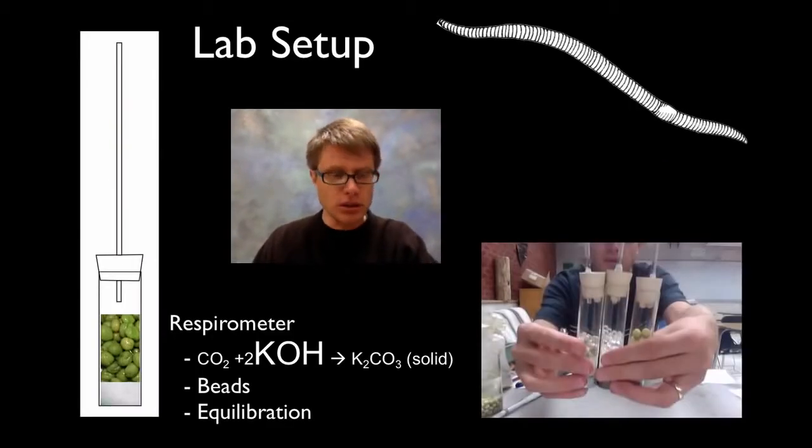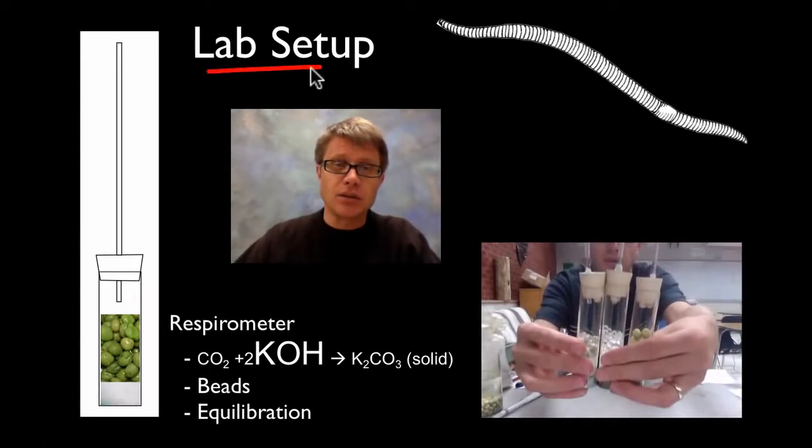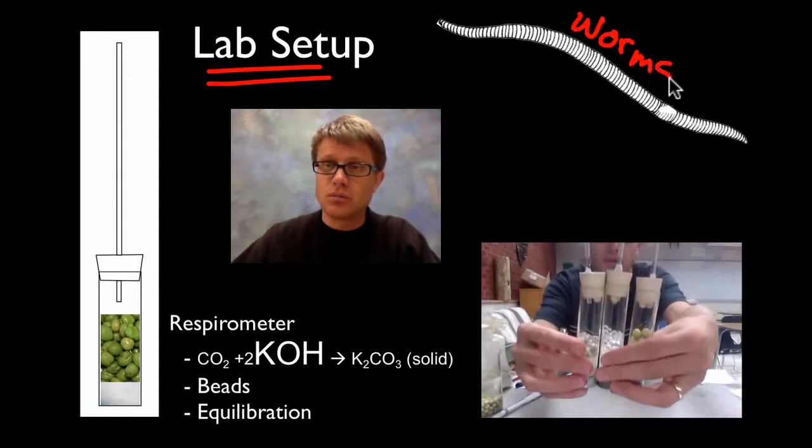But in this lab what we're really trying to do is measure the rate of cellular respiration. We do that by measuring the rate at which oxygen is being consumed. In this lab setup we're going to use two different things: we're going to use worms, and then we're going to use peas.